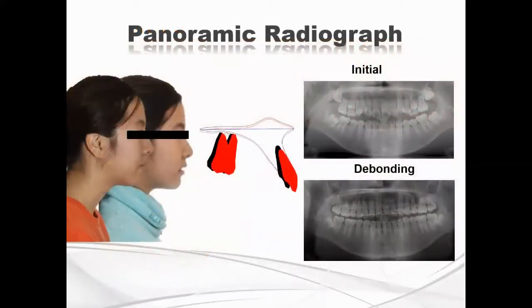MCPP was used for total arch distalization. This is a 10-month portal. The treatment period was 22 months. This is a comparative photo of initial and debonding. In her debonding photo, she has a nice profile.